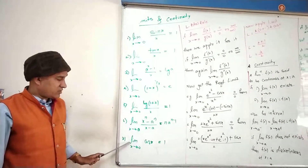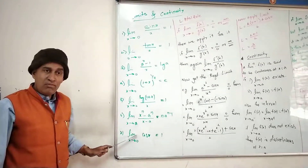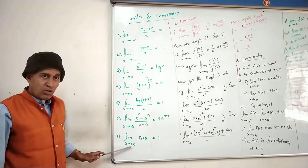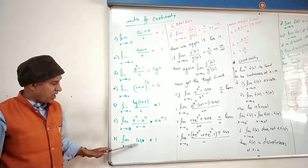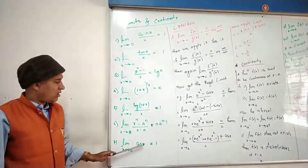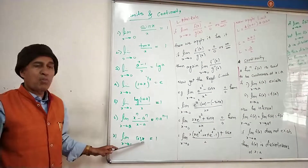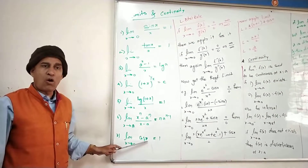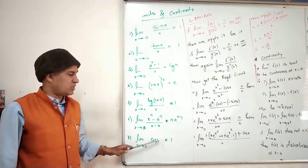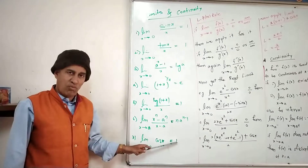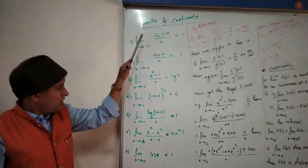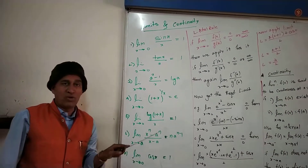Lim x tends to 0, cos(x) is equal to 1. There are no complications here — only cos(x). Because cos(0) is equal to 1. This is a standard formula.